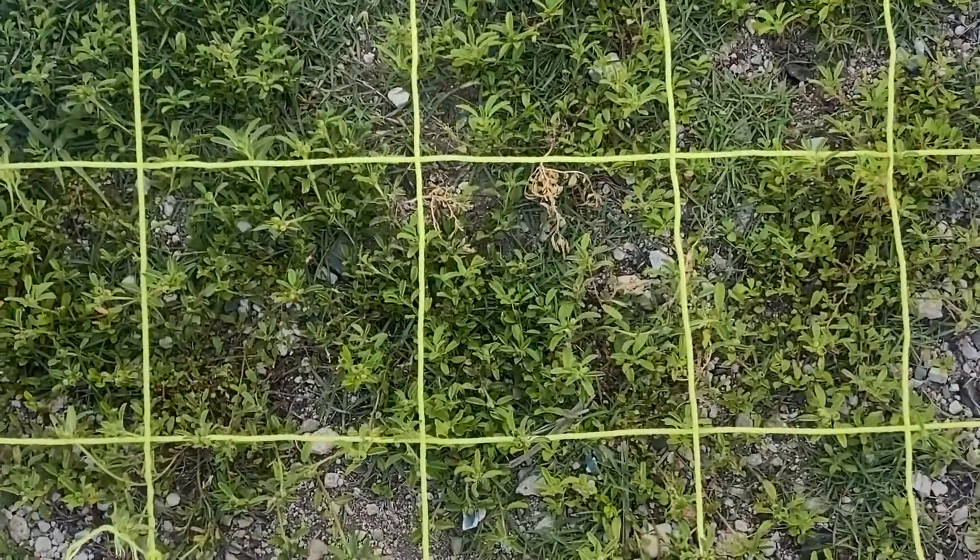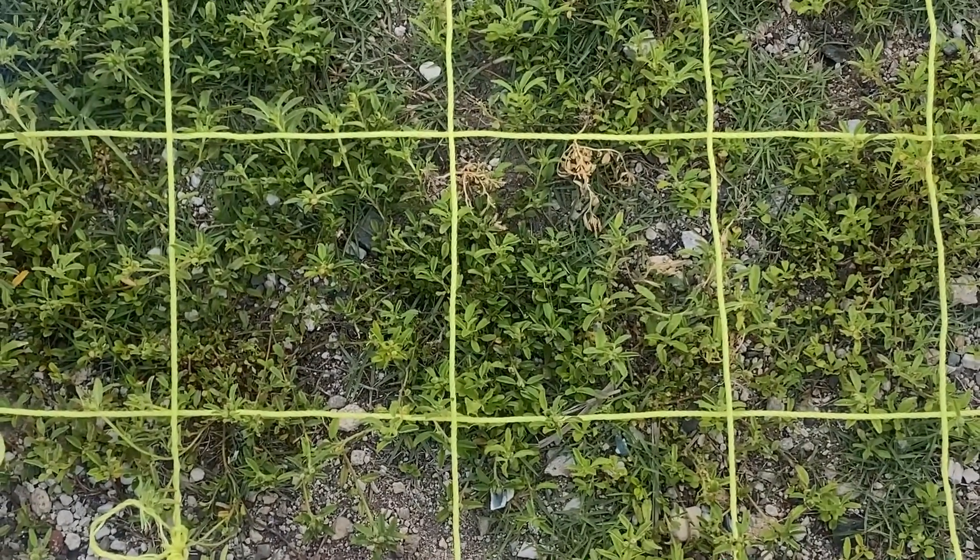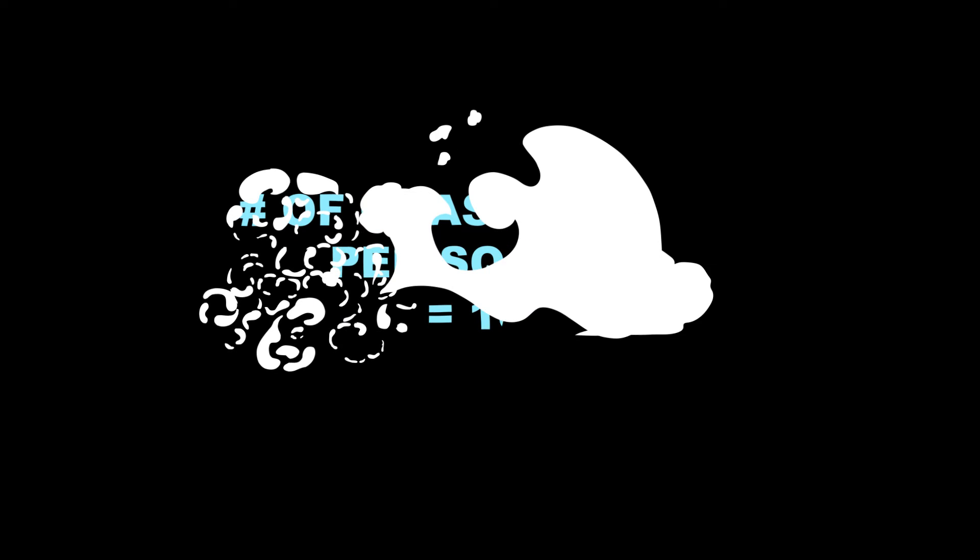Let's test if you understand. In the same area, there are approximately 105 grass plants in each quadrat square. Calculate how many grass plants are located in our area.